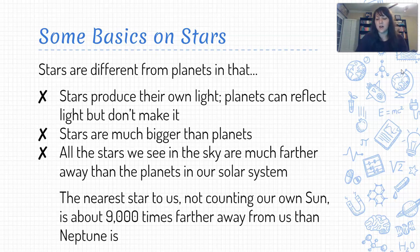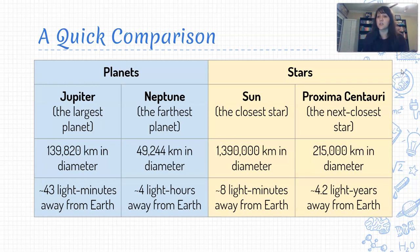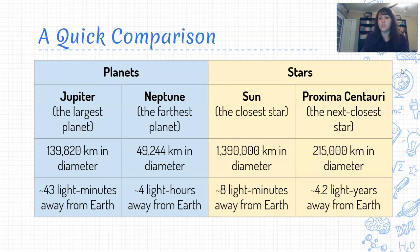To give you a sense of scale: Jupiter and Neptune represent our planets, and the sun and Proxima Centauri represent the stars. The largest planet in our solar system is about 140,000 kilometers across, whereas the sun is 10 times bigger than that. The sun is just sort of an average, run-of-the-mill typical star. Proxima Centauri is a relatively small star, but it's still significantly larger than Jupiter. So stars are typically bigger than planets.